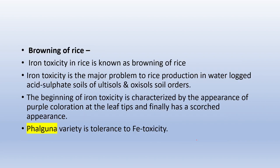Khaira disease is managed by spray of zinc sulfate at 5 kg per hectare at nursery stage, or foliar spray of 0.5% zinc sulfate in early stages. The second disease is browning of rice, caused due to iron toxicity. This is a major problem in water-logged acid sulfate soils (ultisols and oxisols). Iron toxicity is characterized by purple coloration at leaf tips, finally showing a scorched appearance. In Khaira disease, leaves turn yellow then brown; in browning of rice, leaves turn purple in early stages. Falguna variety is tolerant to iron toxicity.